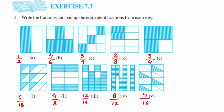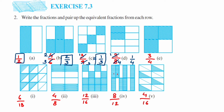For 4 upon 6, dividing by 2 gives 2 upon 3. For 3 upon 9, dividing by 3 gives 1 upon 3. For 2 upon 8, dividing by 2 gives 1 upon 4. And 3 upon 4 cannot be cancelled further, so it stays 3 upon 4. So Row 1 simplified gives: 1/2, 2/3, 1/3, 1/4, and 3/4.